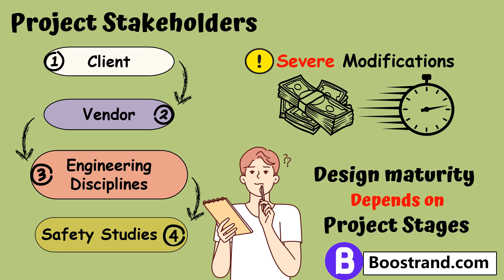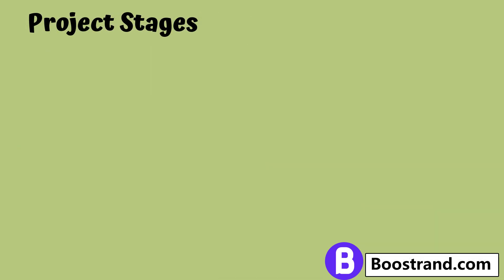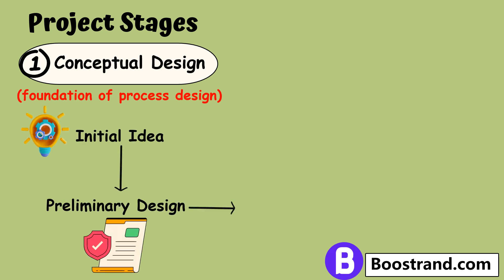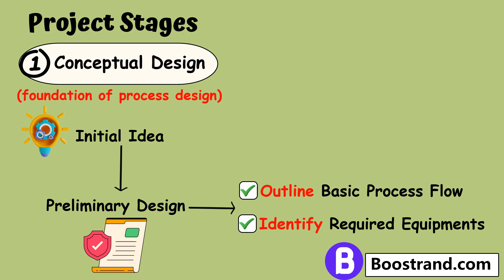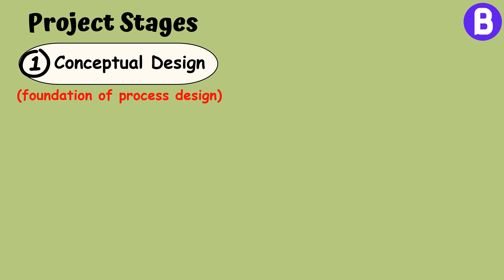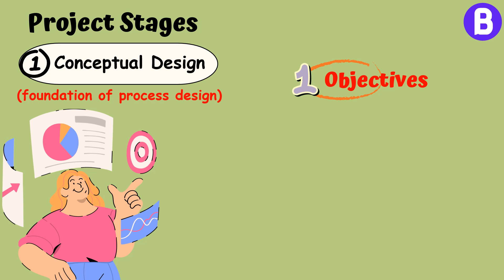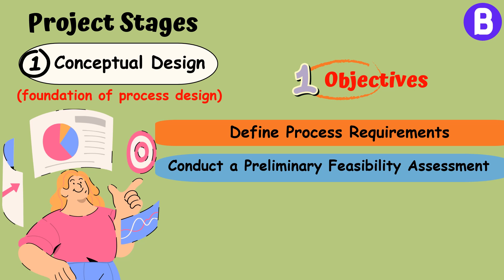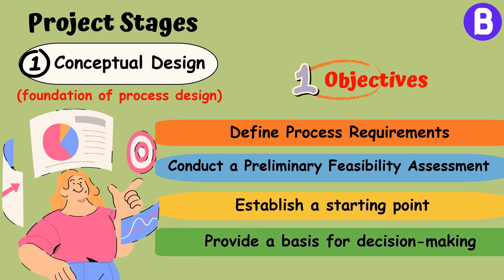The maturity of process design depends on the project stage. The first step in any process design journey is the conceptual design stage, which serves as the foundation for the entire project. It involves transforming the project's initial idea into a preliminary design that outlines the basic process flow and identifies the major equipment required. The objectives of this stage include defining process requirements such as production capacity, product specifications, and environmental constraints through process simulation, conducting a preliminary feasibility assessment, establishing a starting point for subsequent design stages, and providing a basis for decision making on whether to proceed with the project.